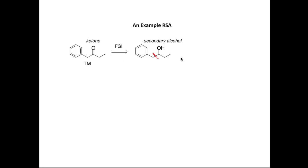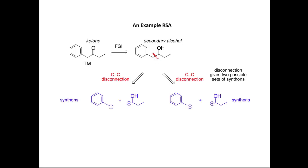This secondary alcohol here now becomes my new target molecule, and we're going to look at disconnecting the carbon-carbon bond, which is shown here, to form a set of synthons. There are two sets of synthons that you can form by disconnection of that carbon-carbon bond.